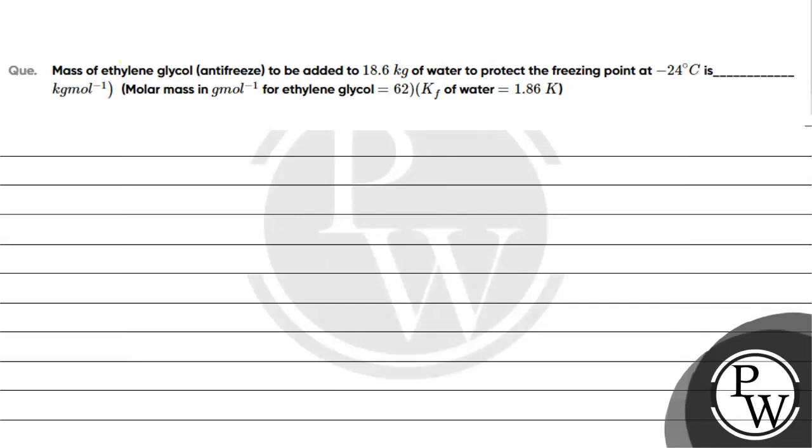Let's read this question. The question says: mass of ethylene glycol (antifreeze) to be added to 18.6 kilogram of water to protect freezing point at -24 degrees Celsius. We have to find how much mass of ethylene glycol to add to 18.6 kilogram of water to protect the freezing point at -24 degrees Celsius.